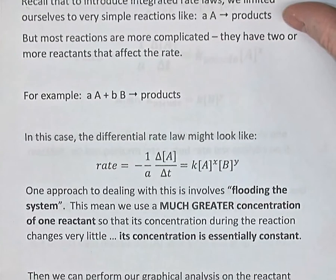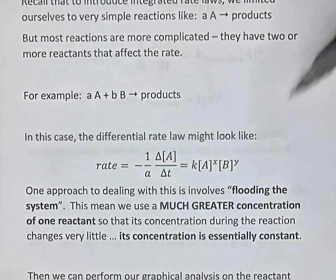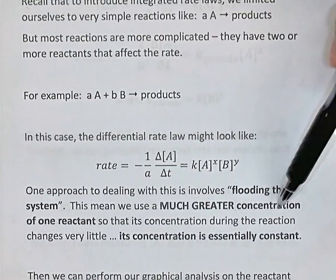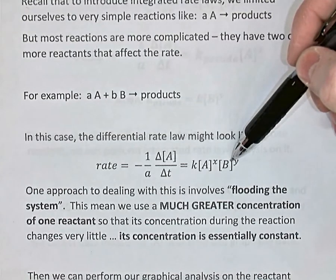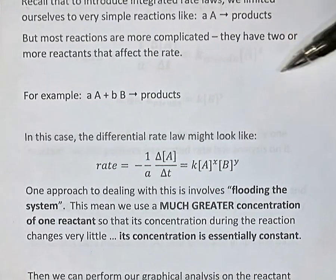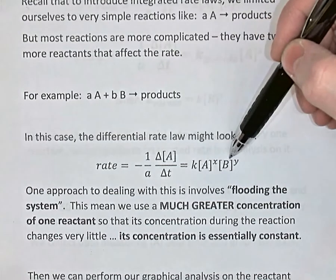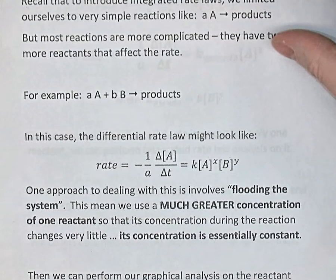To deal with that, we're going to use an approach called flooding the system. You have a flask — that's your system. We flood the system using a much greater concentration of one of the two reactants than the other. If there were three reactants, you would flood the system with two of them so that only one reactant is really changing over time. If you have a very high concentration of reactant B, then B's concentration over time is essentially staying constant — it is dropping, but very, very little compared to A.